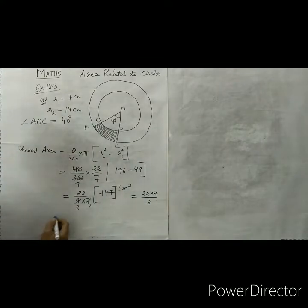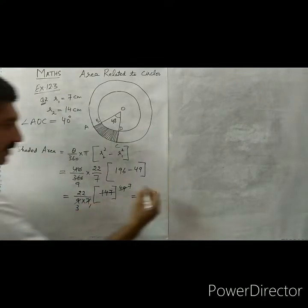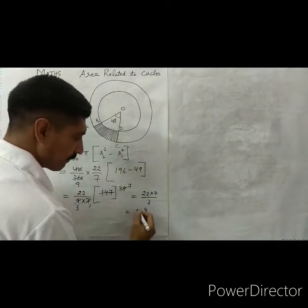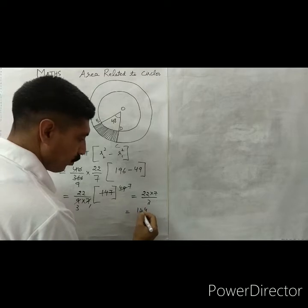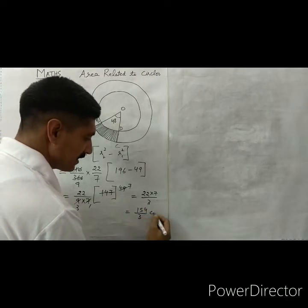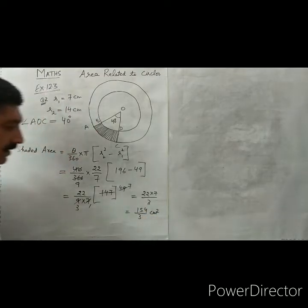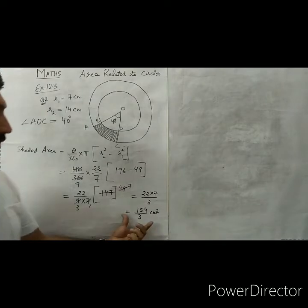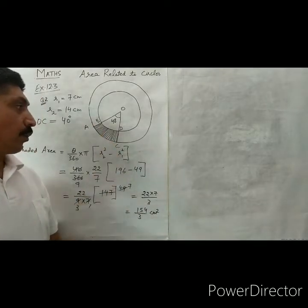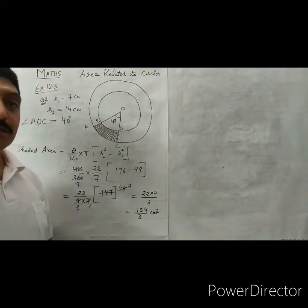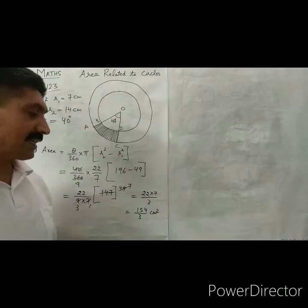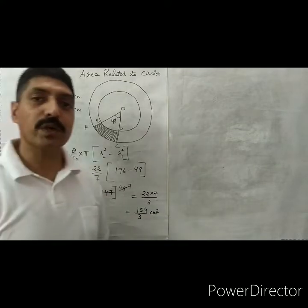The final shaded area is 154 upon 3 centimeter square.